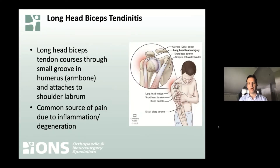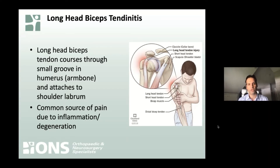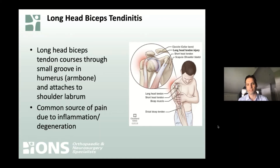We also touched on the long head biceps tendon. Much like the appendix, doctors still haven't figured out exactly what it does — we think it's probably a vestigial piece of anatomy, because you can live with it or without it. Many professional athletes have had the long head biceps tendon tear on its own and still function quite well. However, if the tendon starts getting frayed or inflamed, it can be a very potent source of pain, because it sits in a very tight groove on the arm bone, and where it attaches onto the shoulder labrum can also lead to significant pain.